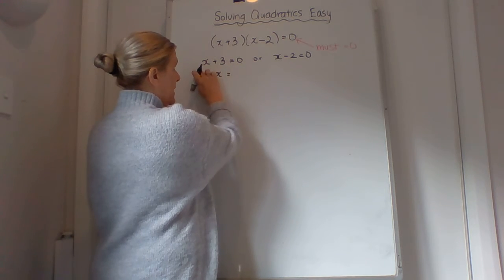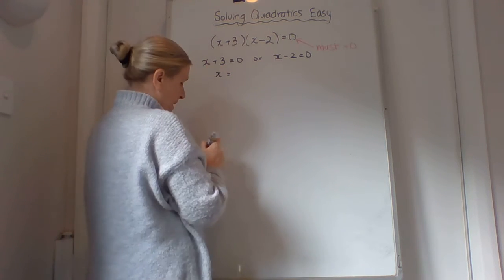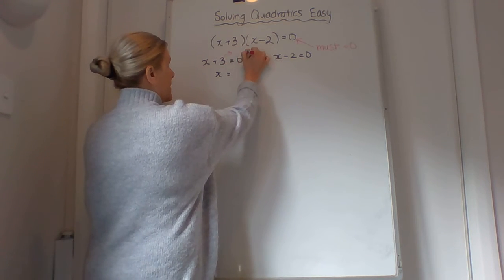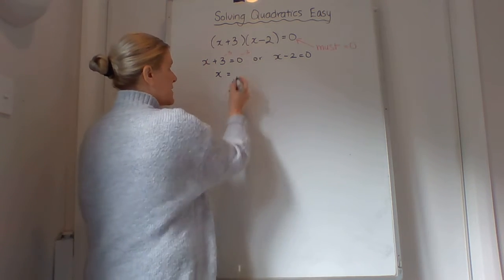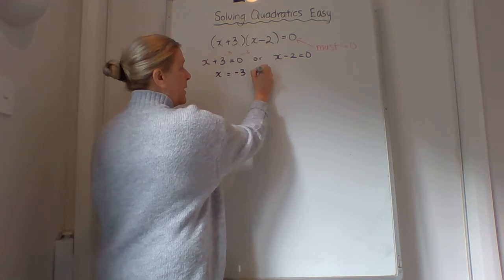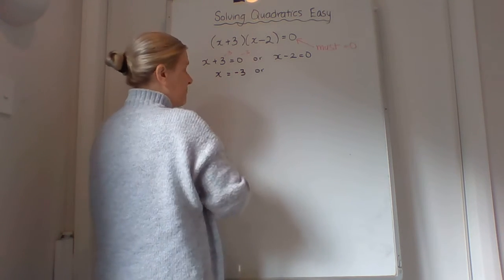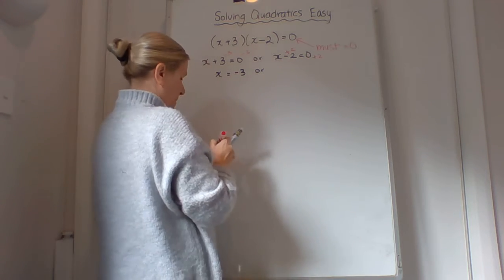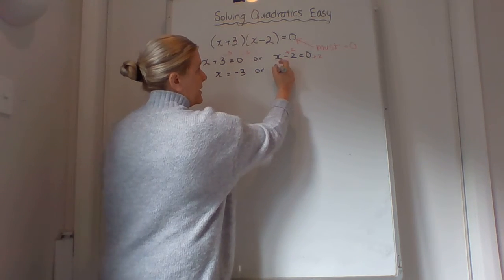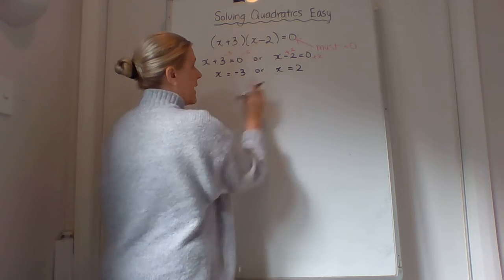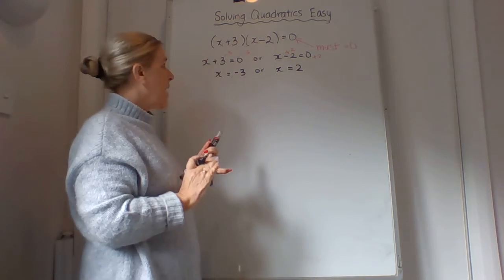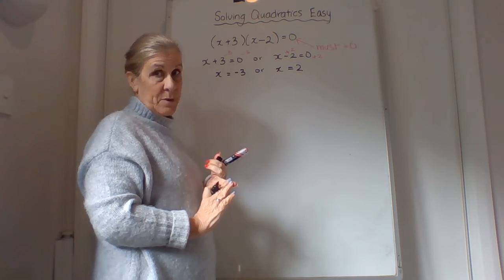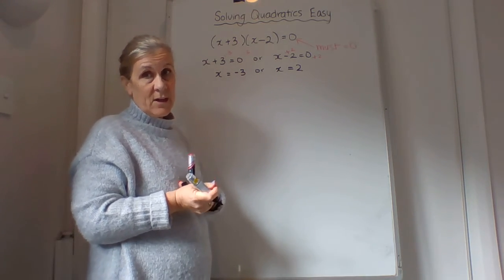One is x+3 = 0, take away 3 from both sides, therefore we get x = -3. Or x-2 = 0, so x = 2. So our answers for this question is either x = -3, or x = 2. Can't be both because it can only be one thing at a time.